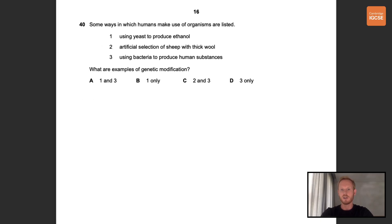Okay final question. Question number 40. Some ways in which humans make use of organisms are listed. What are examples of genetic modification? So number one, using yeast to produce ethanol. That's an example of biotechnology. Number two, artificial selection of sheep with thick wool. That's selective breeding. And number three, using bacteria to produce human substances. That is genetic modification because it involves inserting human DNA into bacterial DNA. The correct answer for this final question is therefore D.